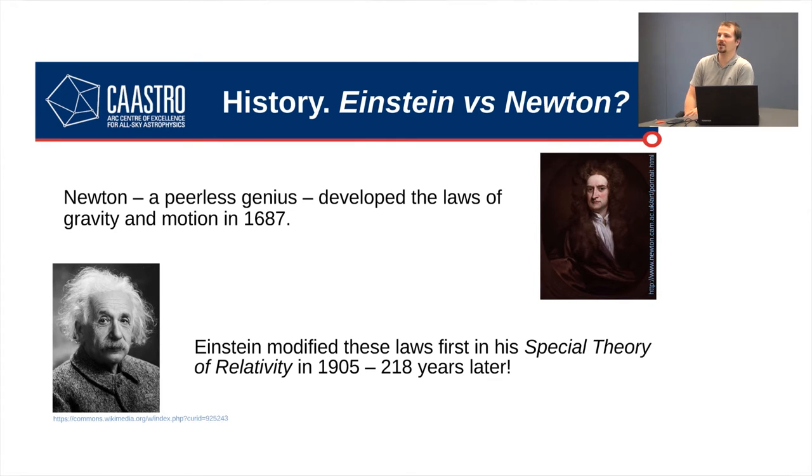Then along comes Einstein in 1905, who published four papers in that year alone. One of those papers outlined special relativity, which is a theory that supersedes Newton's theories in several ways. By the way, one of the other papers that he published that year actually won the Nobel Prize in Physics, so he's a pretty busy boy.